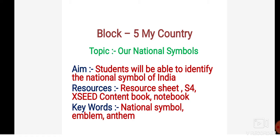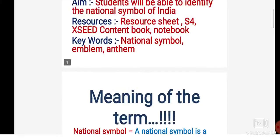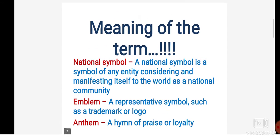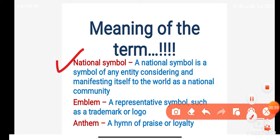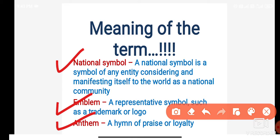Keywords for today are: national symbol, emblem, and anthem. Let's learn the meaning of these keywords. A national symbol is a symbol of any entity considering and manifesting itself to the world as a national community. An emblem is a representative symbol such as a trademark or logo. An anthem is a hymn of praise or loyalty.